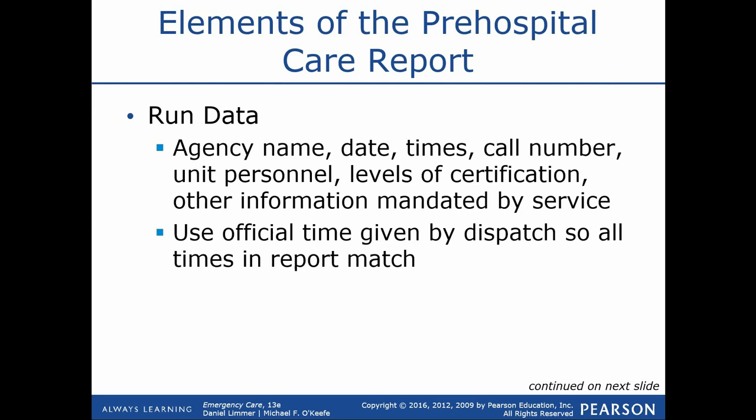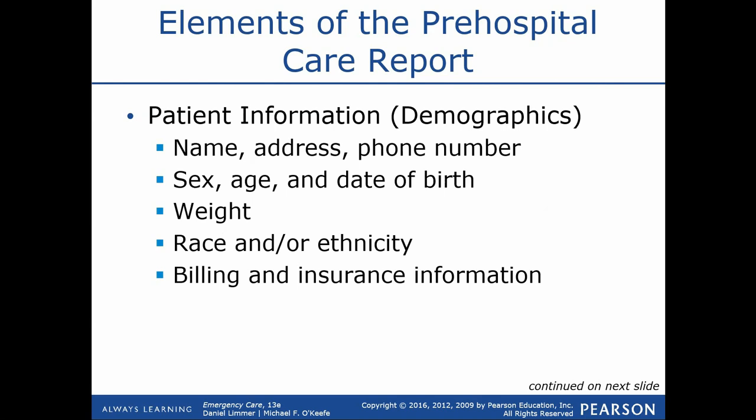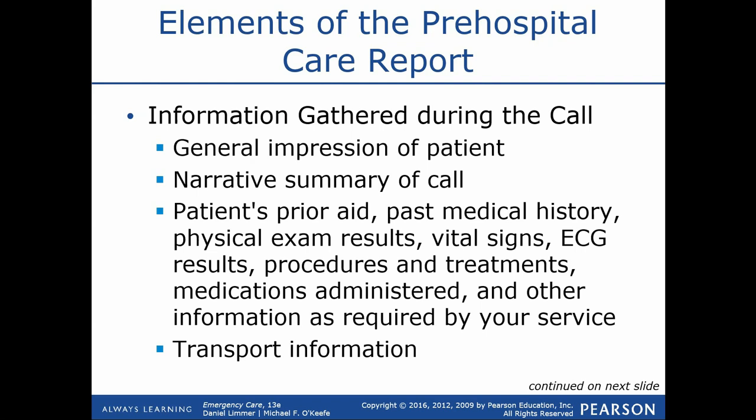Some major categories within a PCR include patient demographics — name, address, gender, date of birth — and all the information on what we did. The narrative is a free-write section. We have lots of fields, drop-down boxes, and check boxes throughout the PCR, but the narrative is an open space to type anything relevant. It's typically used to summarize all events of the call, walking through a storyline of what we did when we arrived and how the patient care experience unfolded.